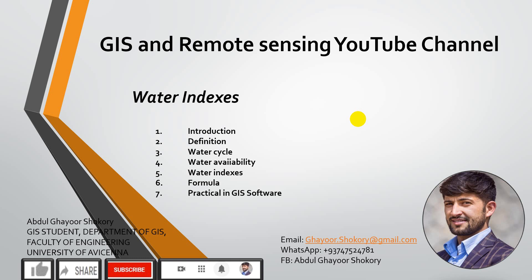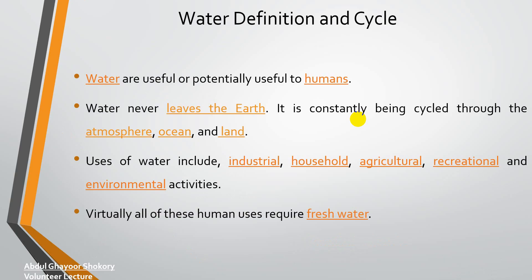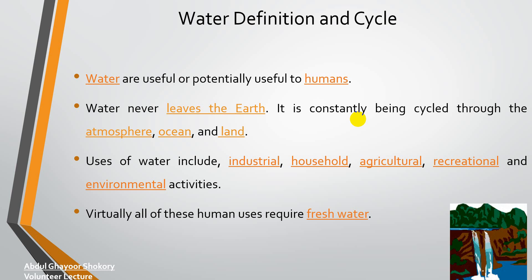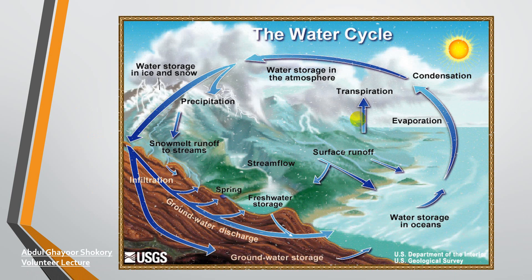What is the definition and cycle of water? Water is useful and potentially useful for humans. Water never leaves the earth — it is constantly being cycled through the atmosphere, ocean, and land. Water is used in real household, agriculture, and environmental activities. Humans use freshwater from the water cycle.